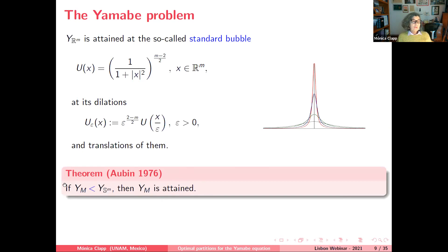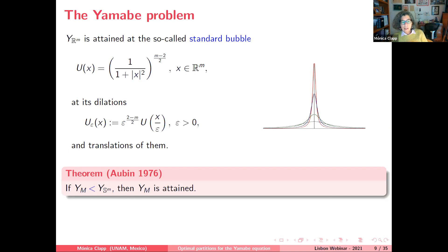To prove this inequality one needs a test function — a function for which the Yamabe quotient is smaller than the best Sobolev constant. The natural approach is to take a point in M, place the standard bubble on the tangent space (very dilated), and project it via the exponential map onto the manifold. Aubin was able to show this works in dimensions larger than or equal to 6 when M is not locally conformally flat. The remaining cases are more subtle and require a more delicate test function construction — that is what Schoen completed.